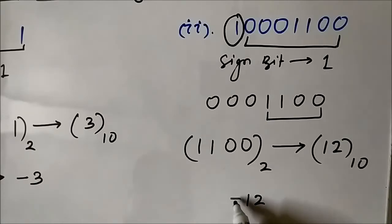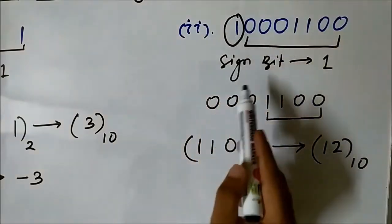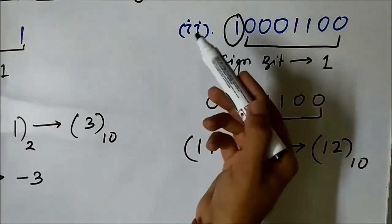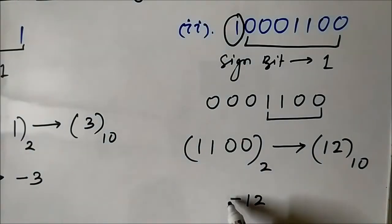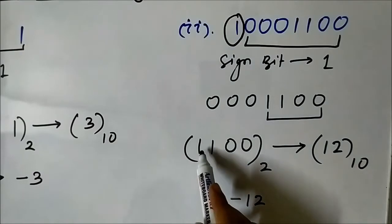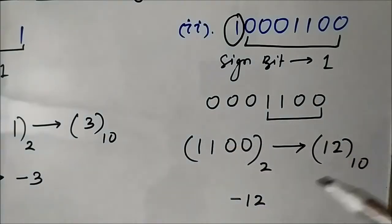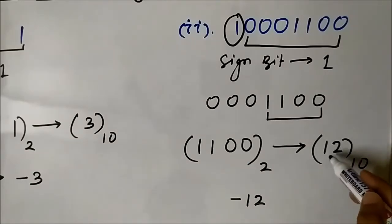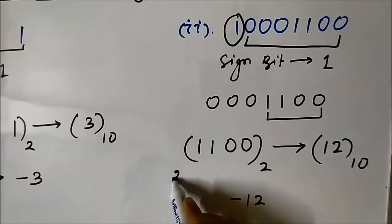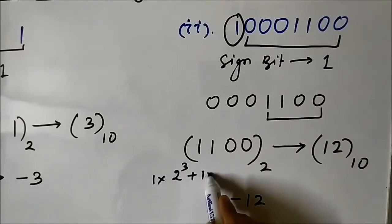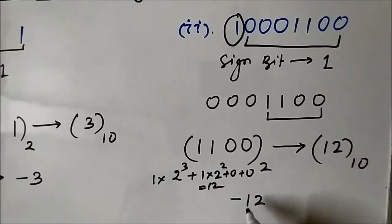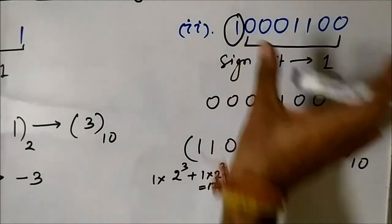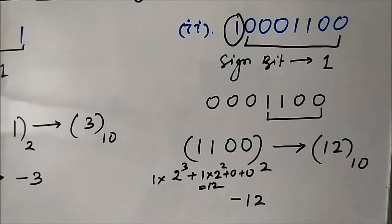Why minus 12? The minus sign came because the sign bit — the extreme left bit, the MSB — is 1. When the sign bit is 1 it means the given number is negative. The remaining bits are the magnitude bits, and converting them to their decimal equivalent gave us 12. So the given number is minus 12.